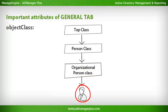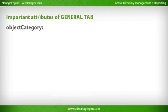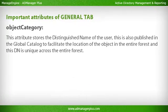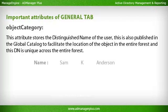To search for a user in LDAP Browser, use the query ObjectClass=User and ObjectCategory=Person, as computers also have users. Object Category: This attribute stores the distinguished name of the user, is also published in the Global Catalog to facilitate the location of the object in the entire forest, and this DN is unique across the entire forest.